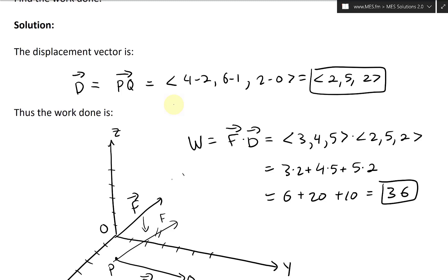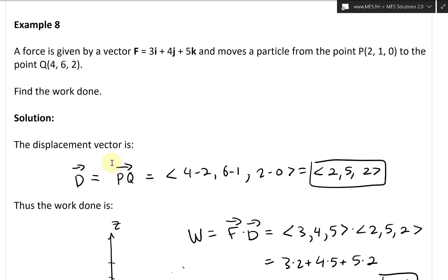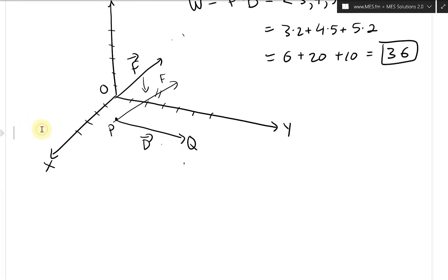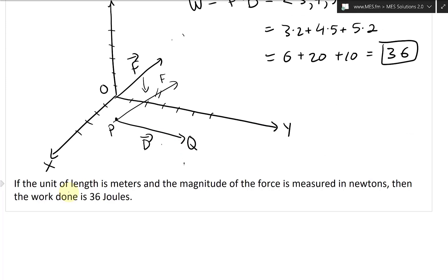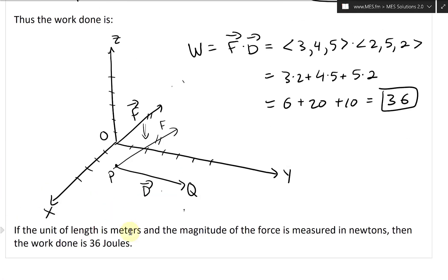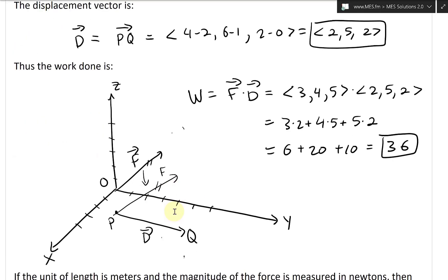So that's 36. If the unit of length is meters and the force is measured in Newtons, then the work done is 36 Joules — those are just the basic physics units.